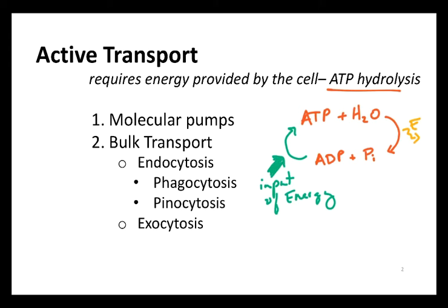There are two basic types of active transport. In the case of molecular pumps, it's usually very obvious when you look at diagrams that you're looking at active transport, because ATP is part of what you're going to see in a diagram. The other kind of active transport is referred to as bulk transport, which is used when there are much larger quantities of material or much larger objects that need to be brought into or released from the cell.